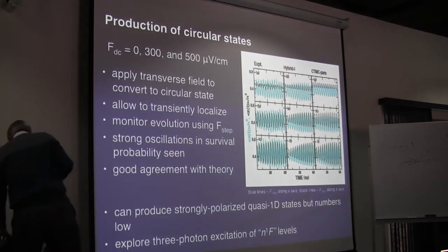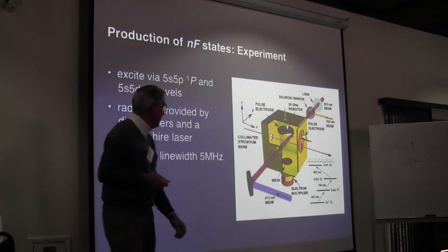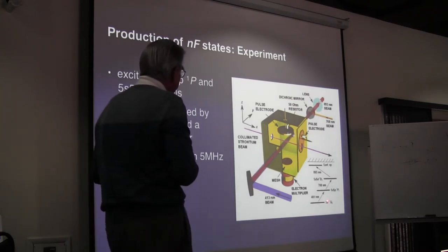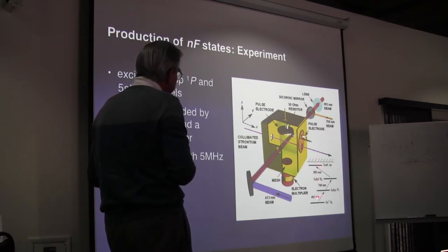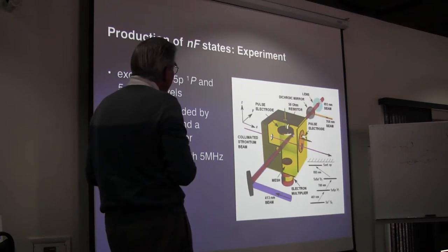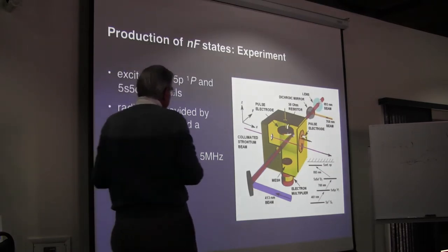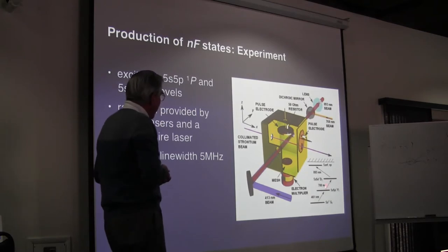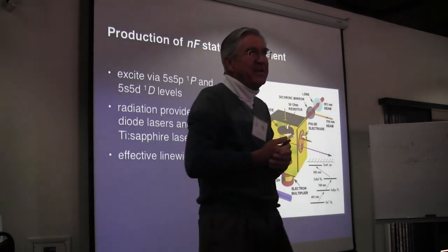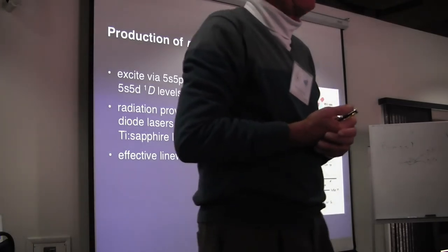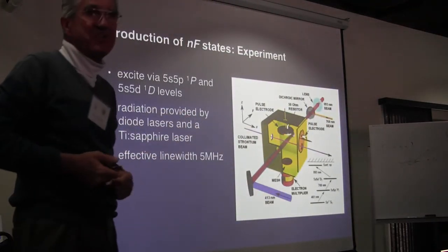We decided to explore three-photon excitation. We would make a transition from the 5S² ground state through 5S5P, then 5S5D, and then up to the Rydberg state. This requires radiation of 461 nanometers, 768 nanometers, and 893 nanometers — all relatively easy to produce: a regular diode laser and a Ti:sapphire laser. From a Ti:sapphire laser you get about a watt of power at the required wavelengths, so this should give us very large excitation rates.